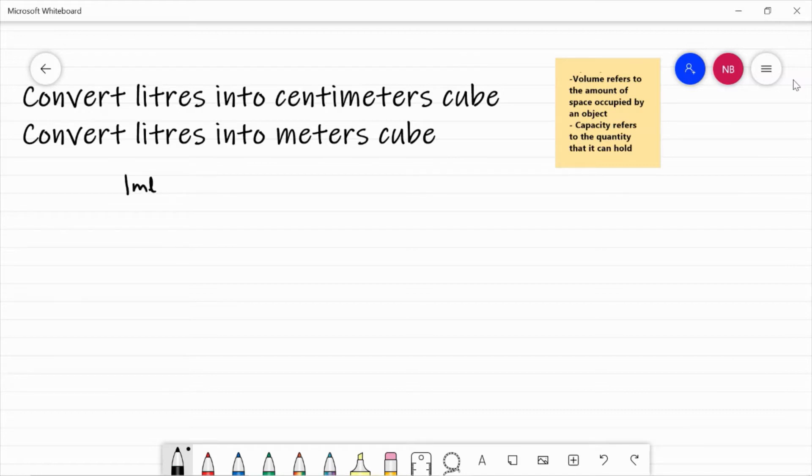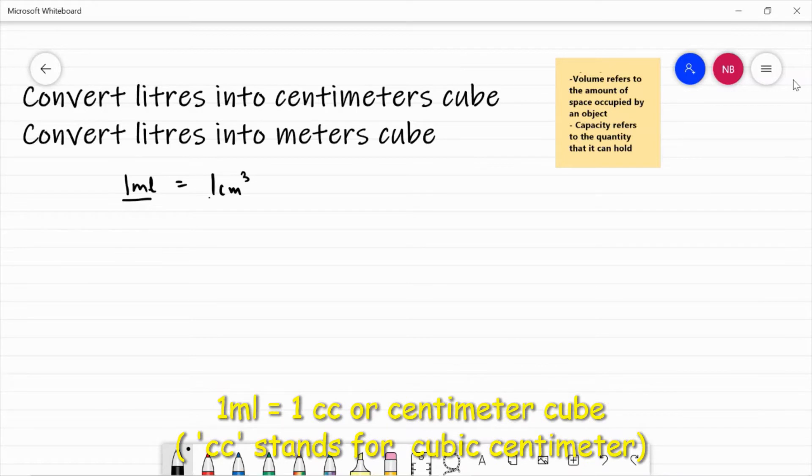So let's learn this: one milliliter is equal to one centimetre cube. This is so simple. You can just learn it by heart and using this formula, we'll be able to get all the conversions.